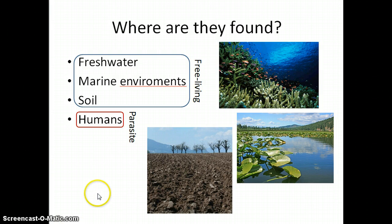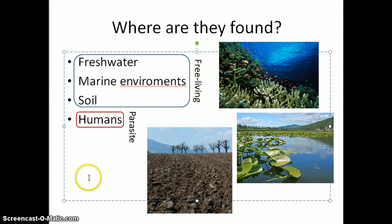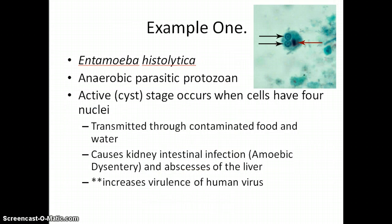They can also be parasitic and infect humans and live in the host cells of a human. Entamoeba histolytica is an anaerobic parasitic protozoan, meaning that it does not need oxygen to survive, and it is a parasite like the ones I was just talking about.